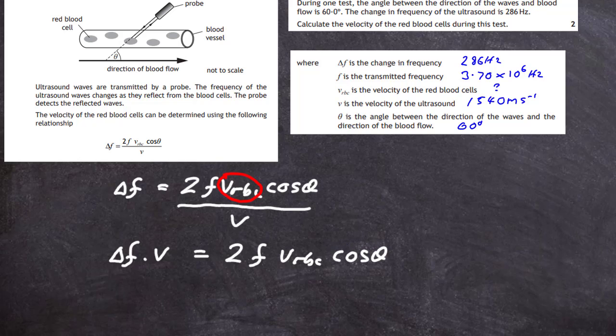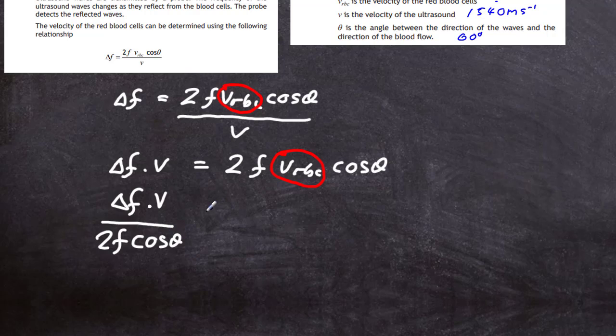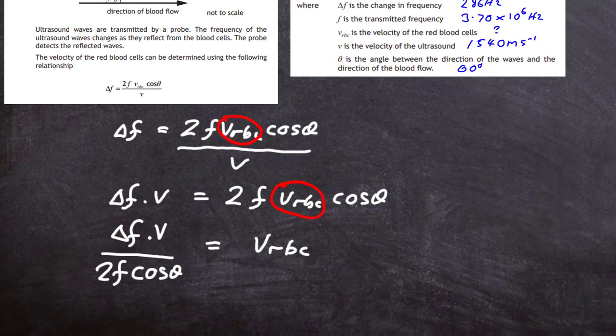Divide each side by 2F cos theta. Delta F times V divided by 2F cos theta equals V_RBC. I've now finally rearranged everything and all I've got to do is put in the numbers.